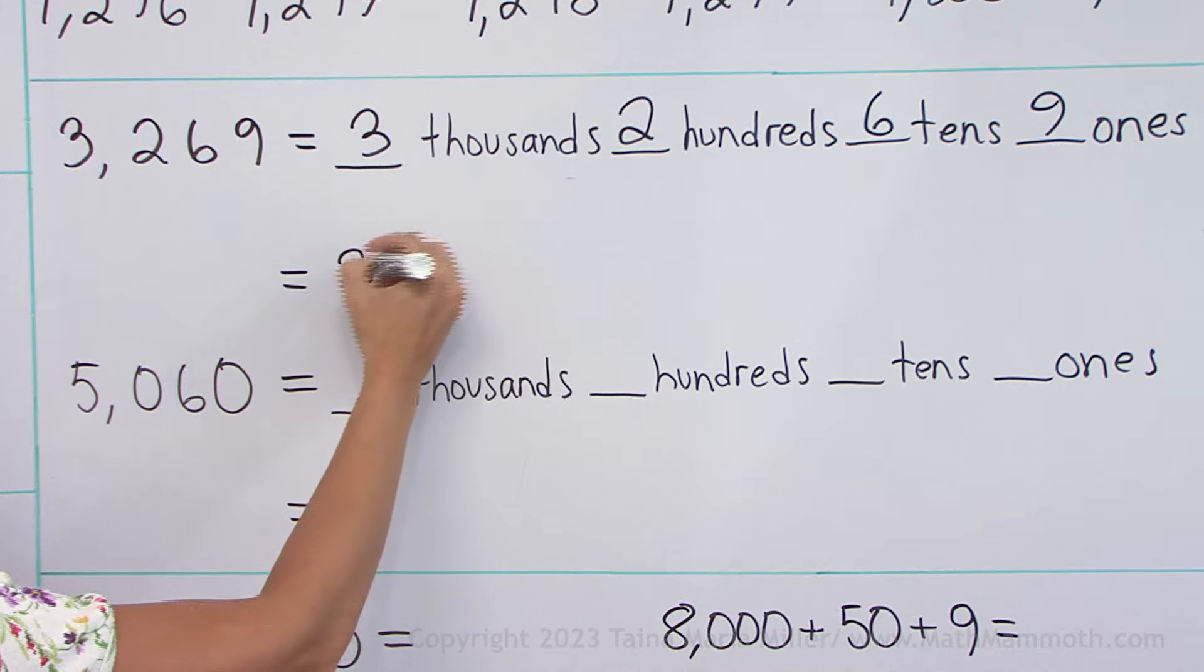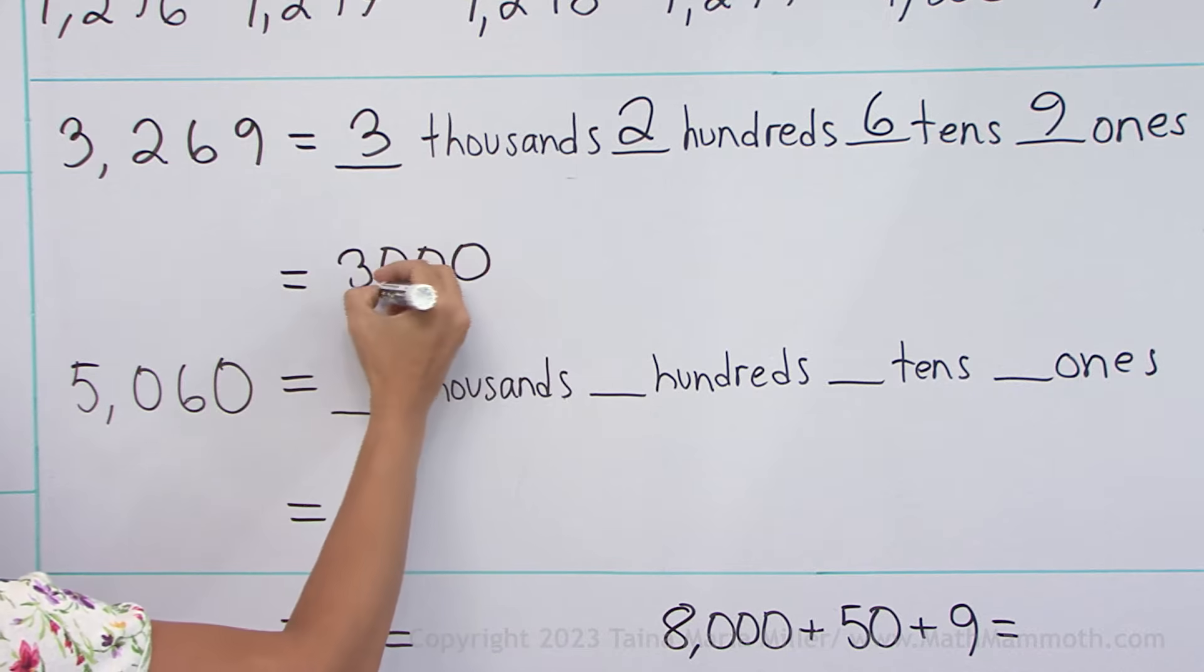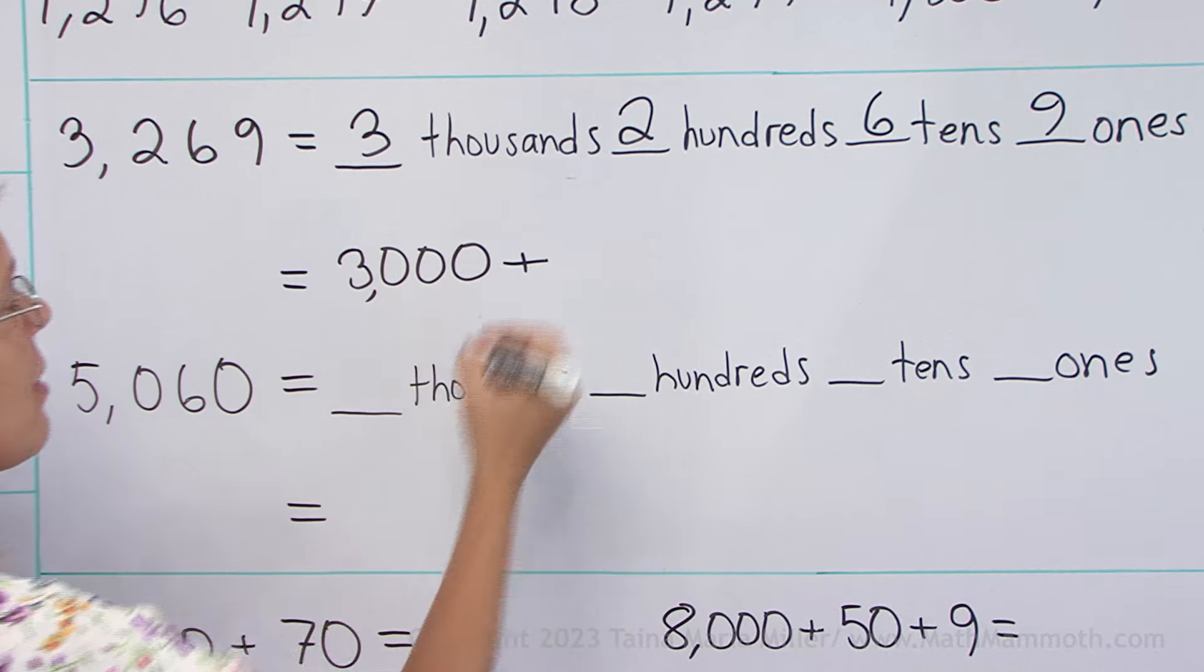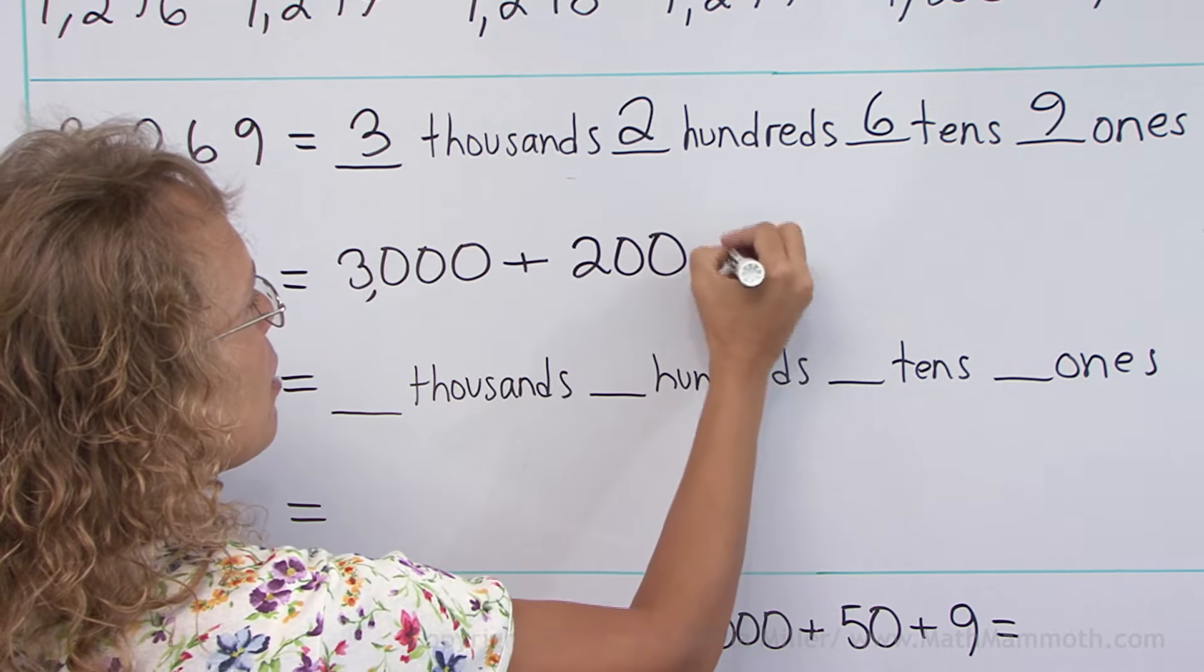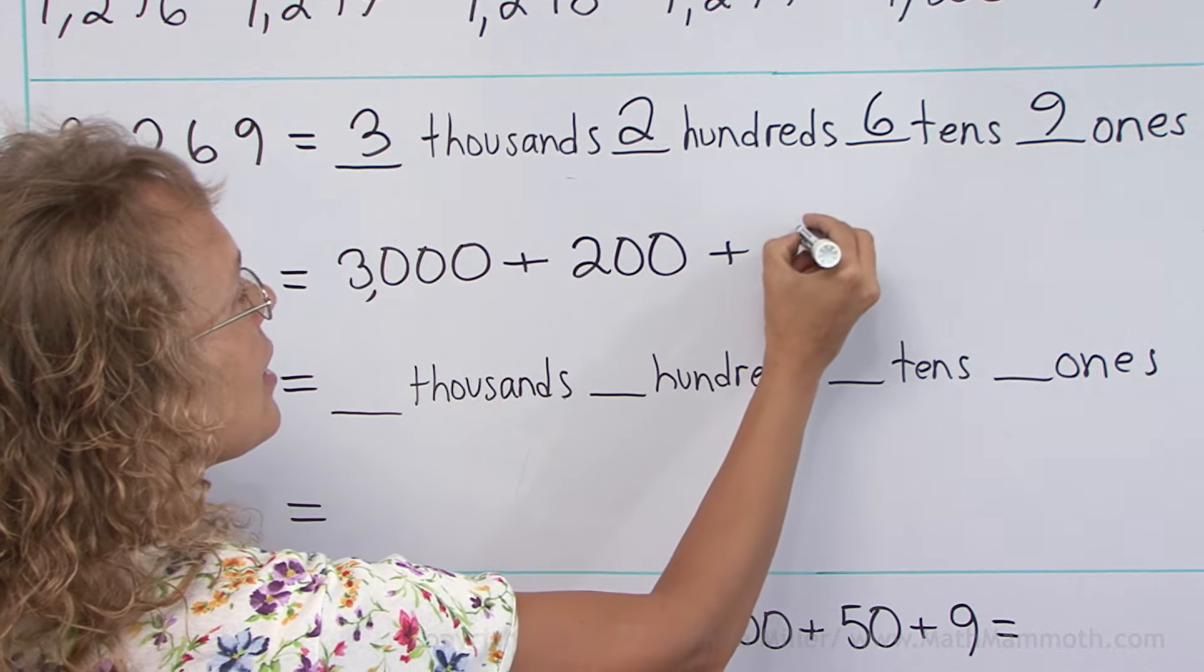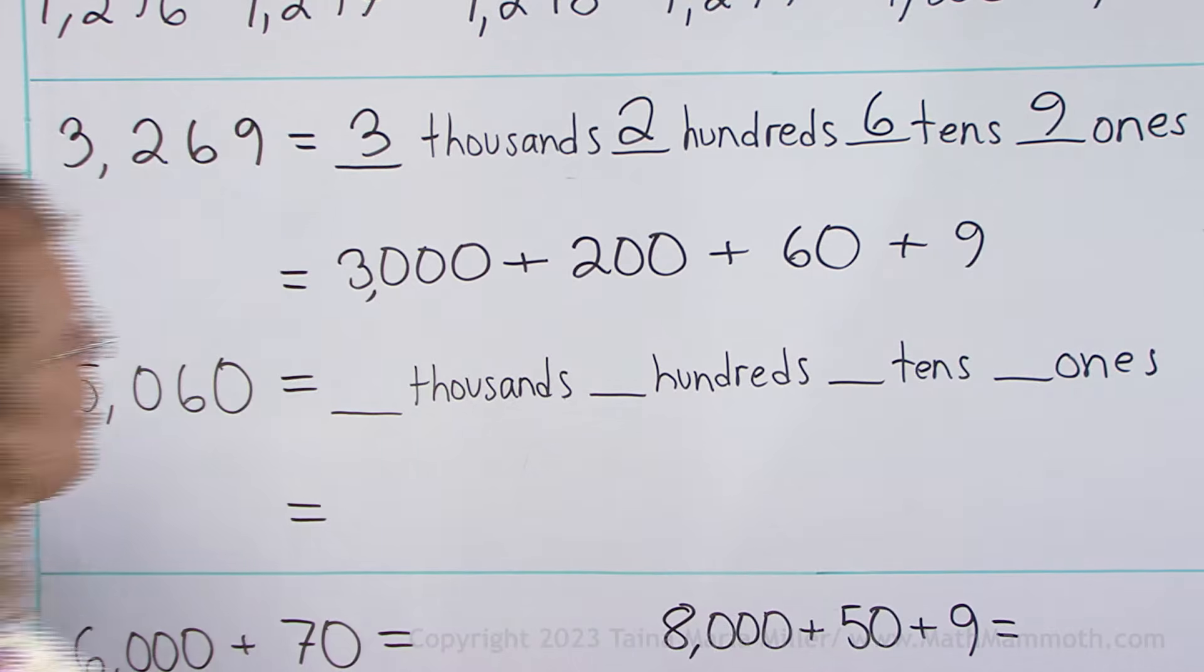So I'm going to write it as three thousand plus two hundred plus sixty, which is six tens, and plus nine.